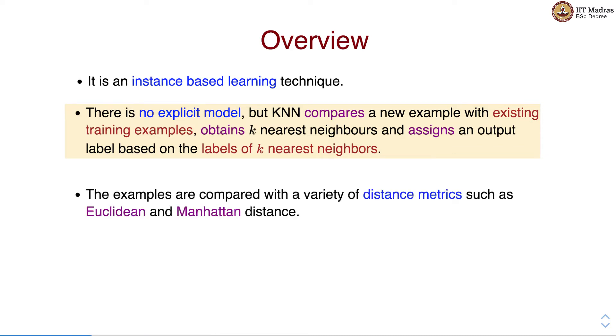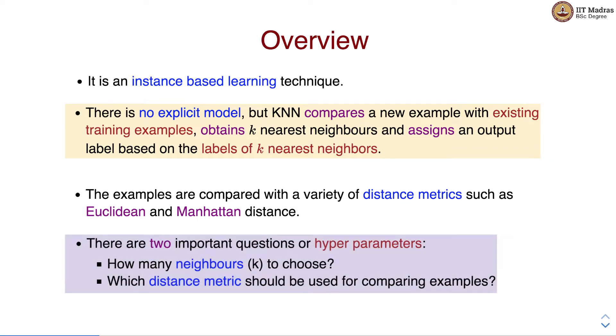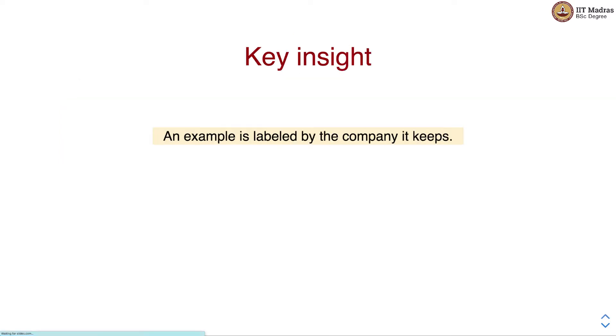The examples are compared with a variety of distance metrics such as Euclidean and Manhattan distance. There are two important hyperparameters in KNN: how many neighbors to choose, that is what is the optimal value of K, and which distance metric should be used for comparing examples. The key insight here is that an example is labeled by the company it keeps.